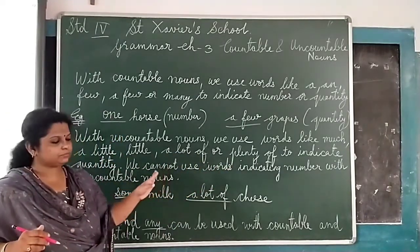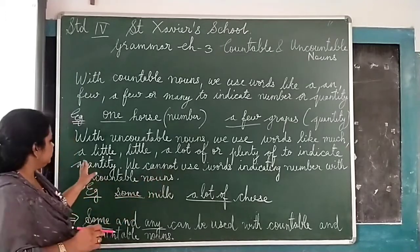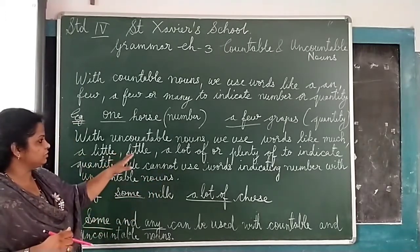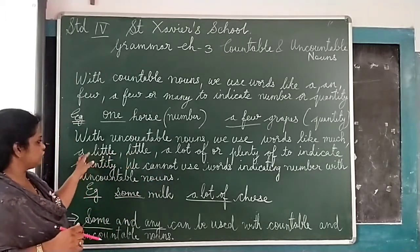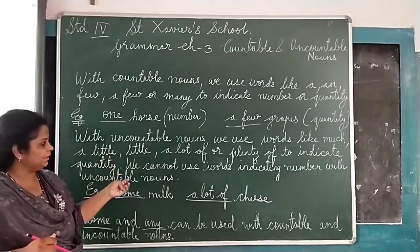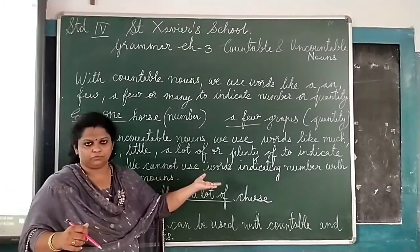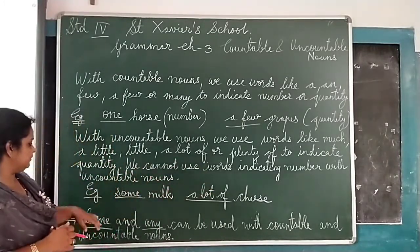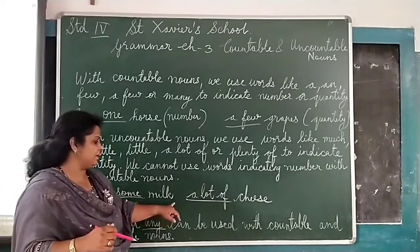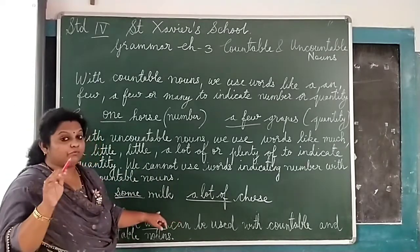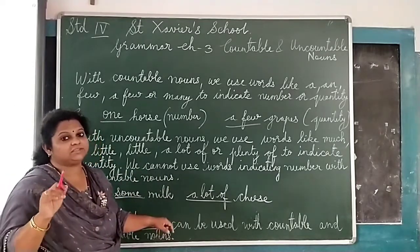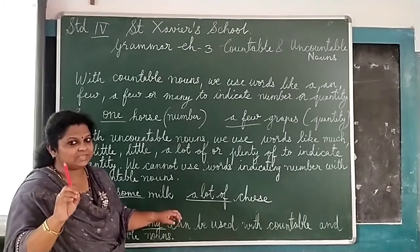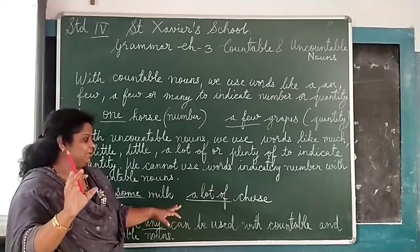So with uncountable nouns we can use 'much', 'a little', 'a lot', 'plenty of' words. For example, here we can say 'some/many'. We cannot say 'three mini' or 'four mini' like that. We can say 'some/many'. A blank cheese — a lot of cheese.